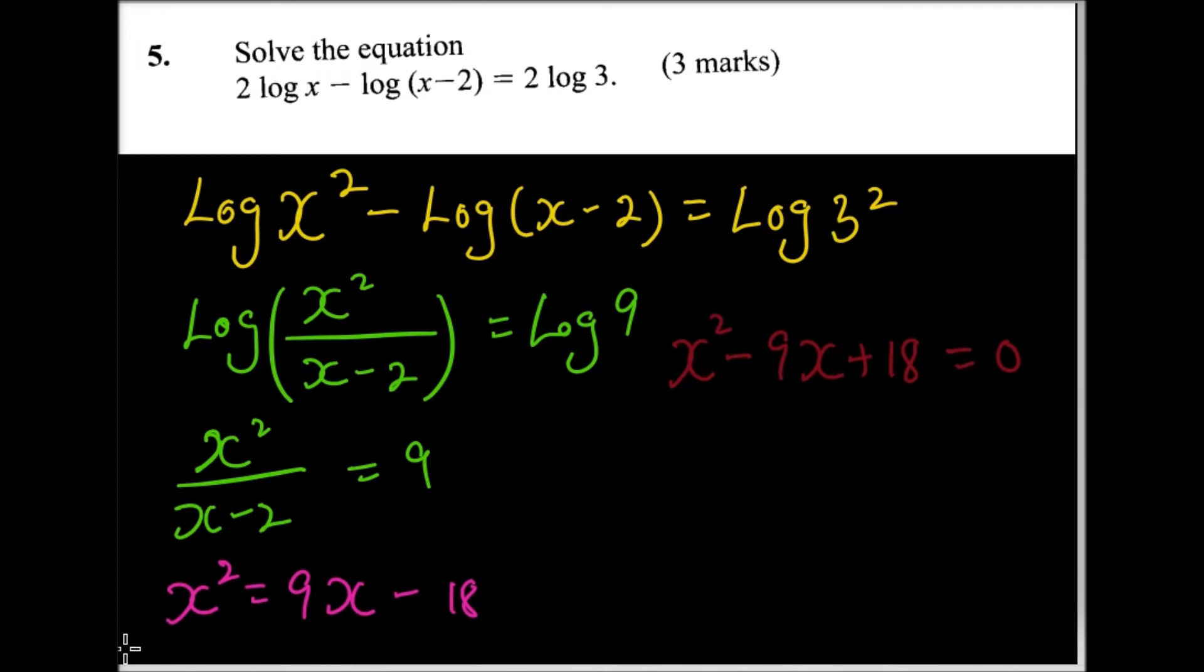You get two numbers such that when you add them you get -9, and when you multiply them you get 18. These two numbers are -6 and -3. So when you factor out, you get (x - 6)(x - 3) equals zero, which means x equals 6 or x equals 3.